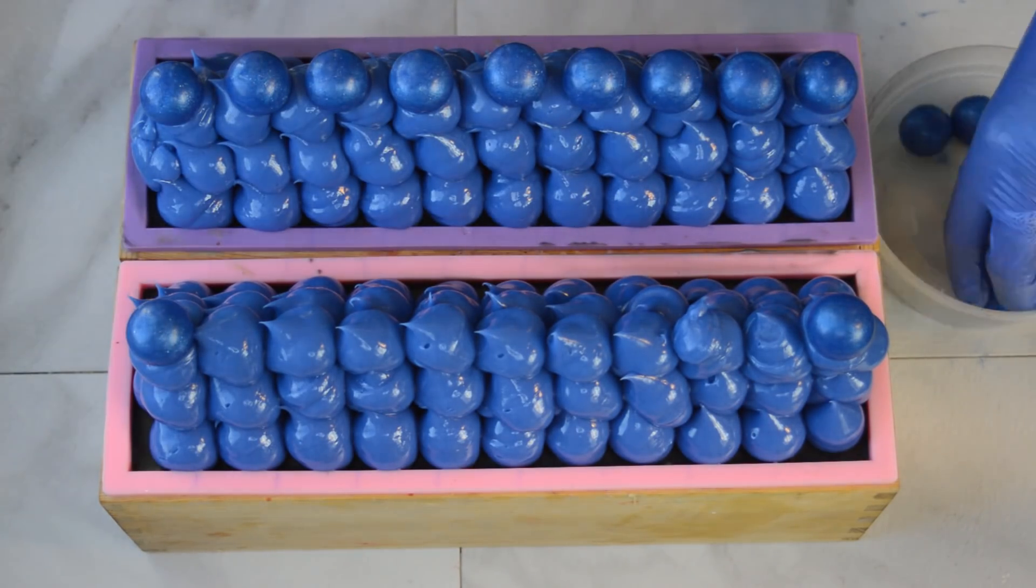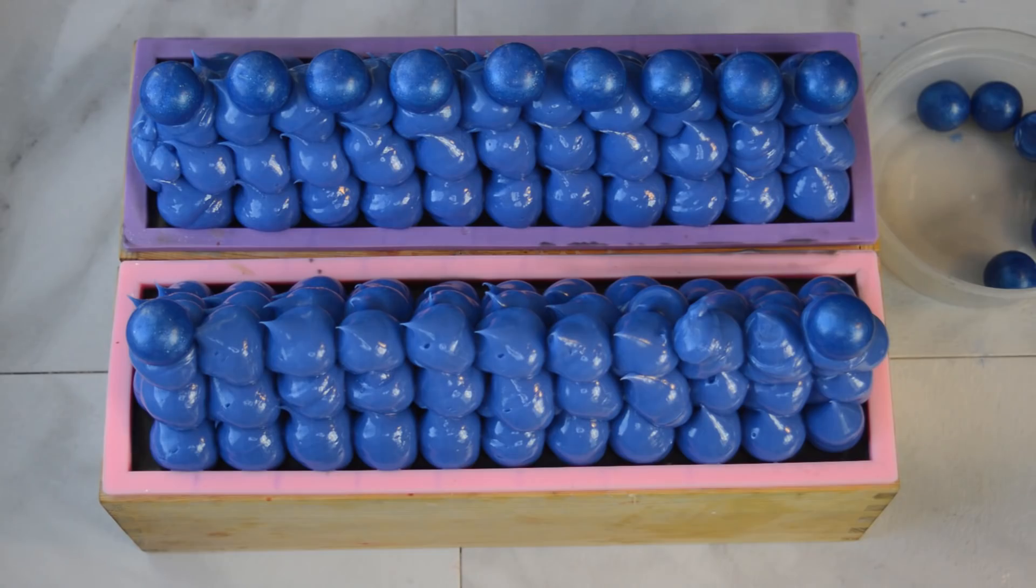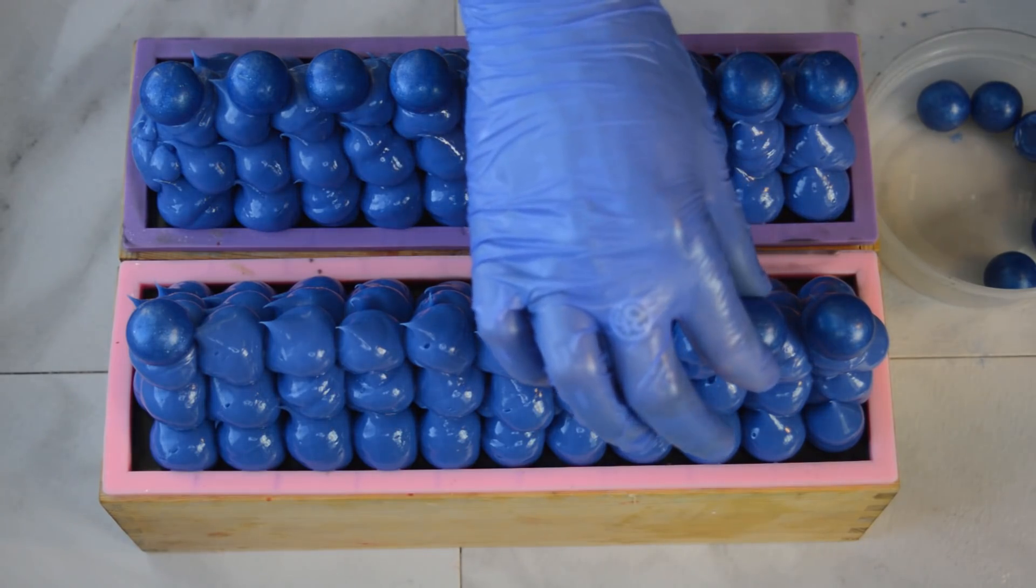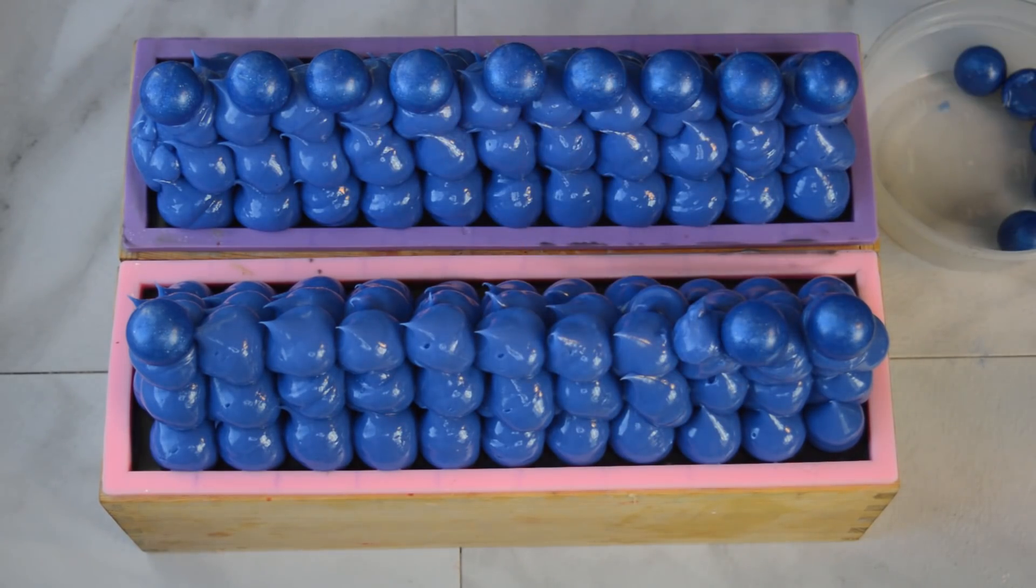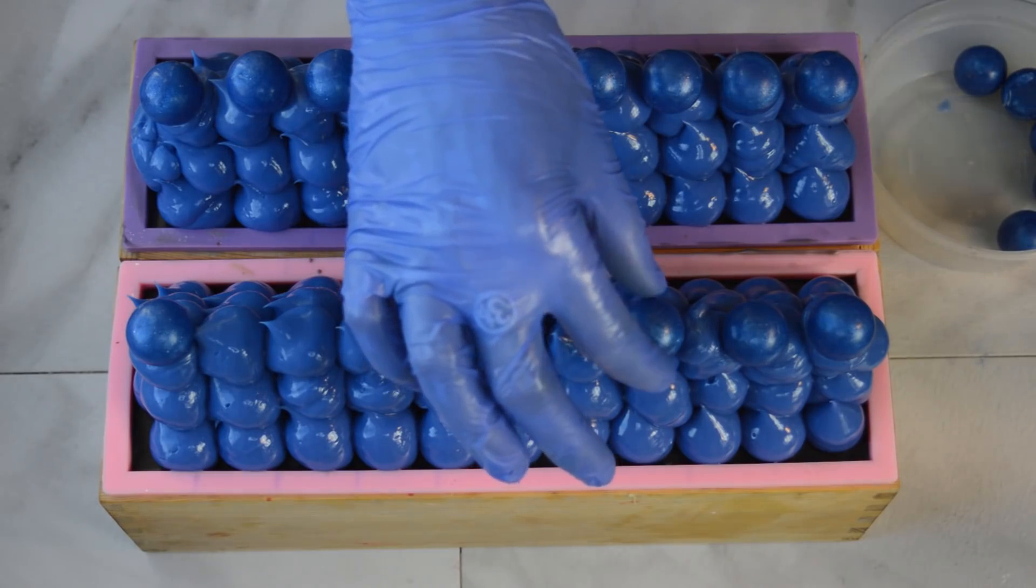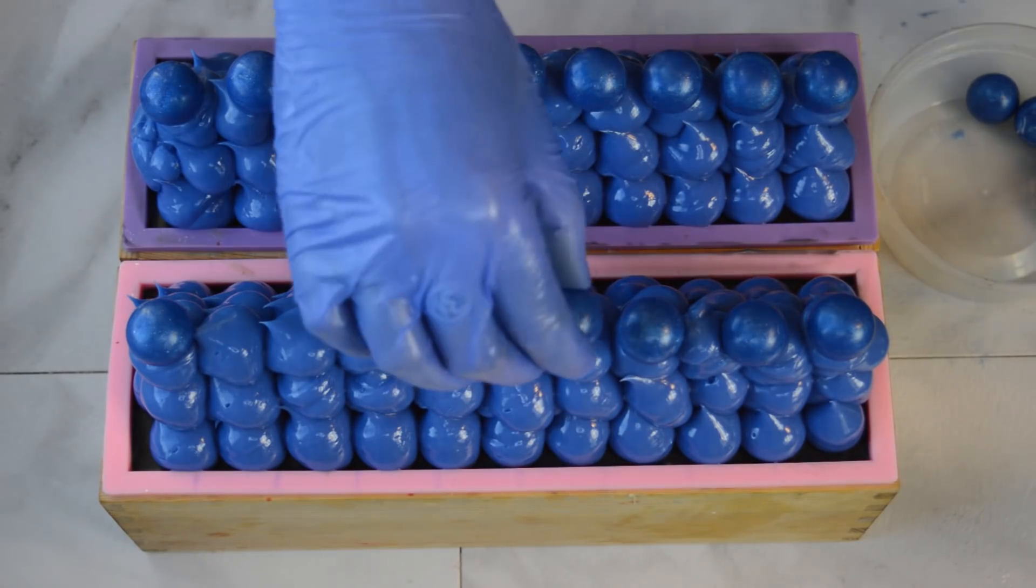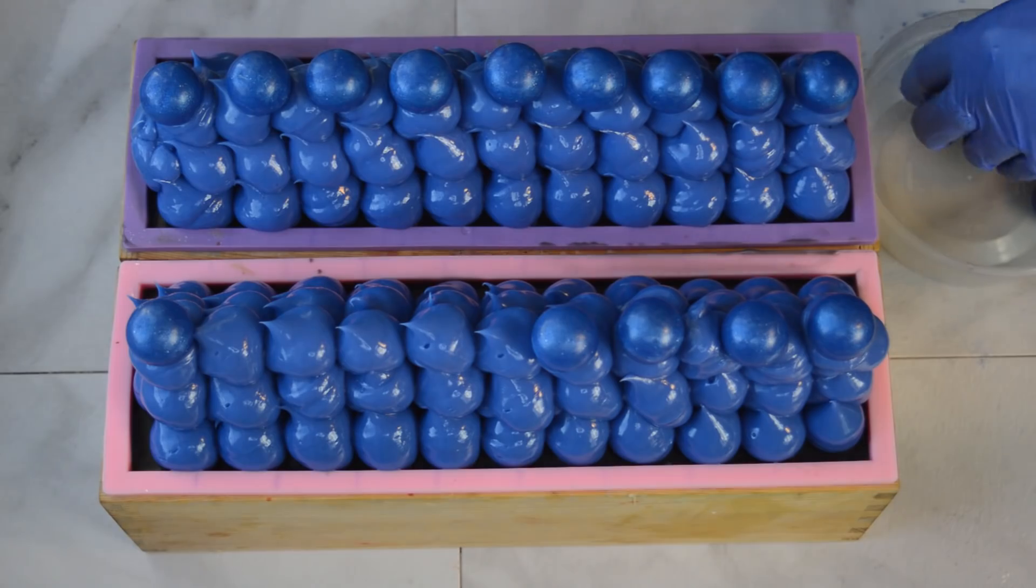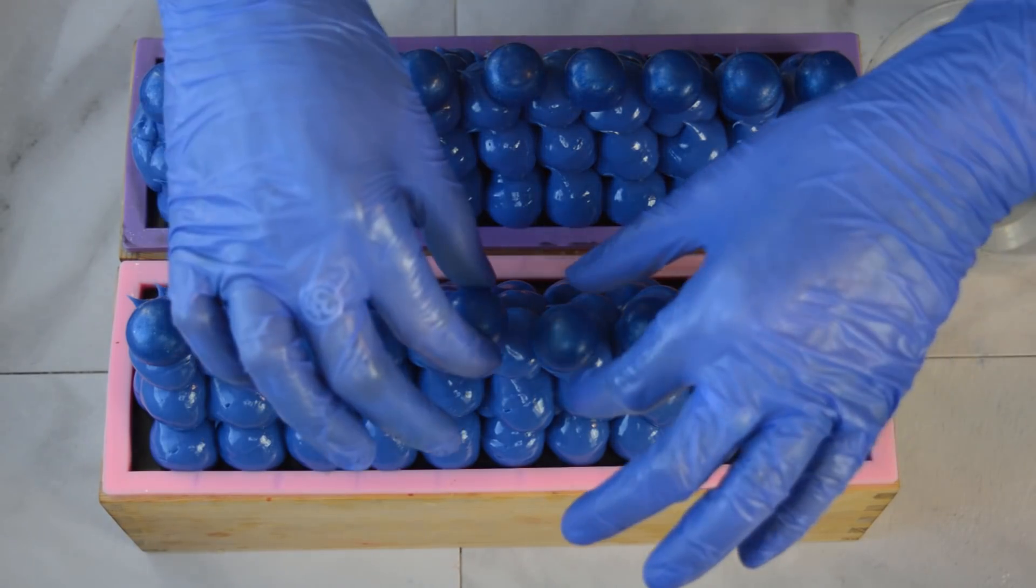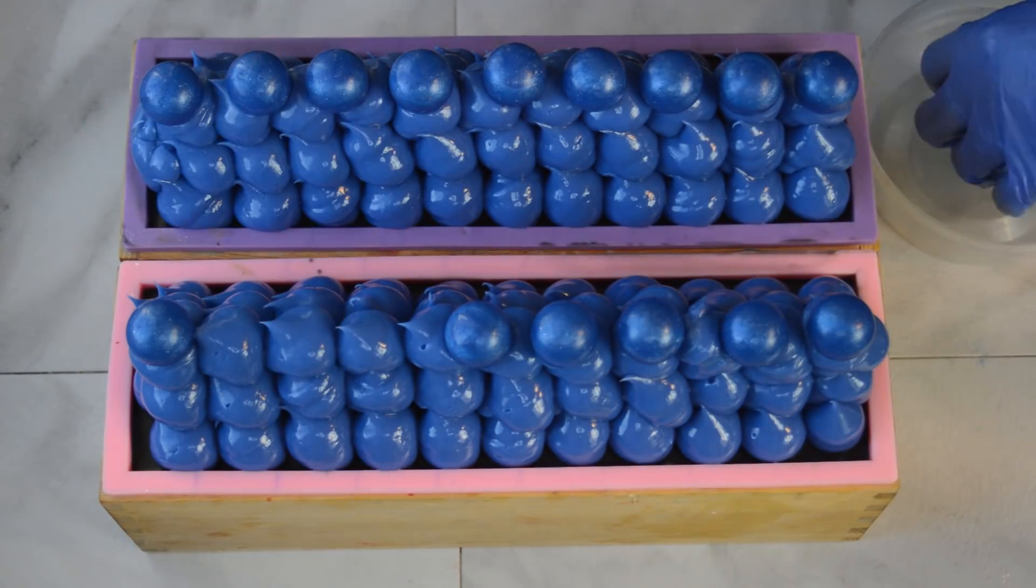All right, soapy gumballs on here. And then I'm going to put on some blue glitter. And we're going to call it a day. Let it sit for 24 hours. Come back and cut it. And then I have a stamp that is going to go on the front of the soap to really complete this design.